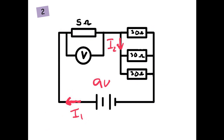Okay, circuit number two. I want you to find the current I1, the current I2, and what the voltmeter is going to read. Pause the video now and have a go.